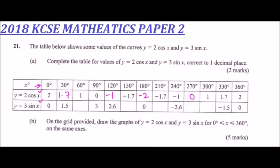Then we go to the function y equals 3 sin x. When x is 60, so 3 sin 60, you get that is 2.6. Remember, it is 1 decimal place. So we go to 120. 3 sin 120. 3 sin 150, not 120. So 3 sin 210, you get it is minus 1.5.